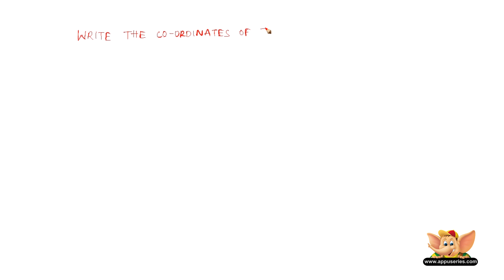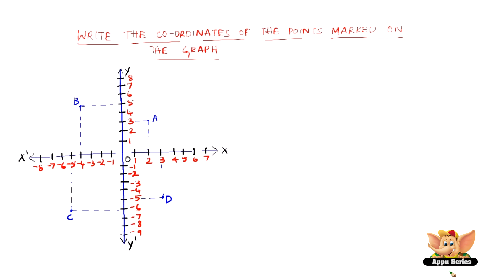Let us write the coordinates of the points marked on the graph. First, let us consider point A. We can see that the distance of A from the y-axis is 2 units, and the distance from the x-axis is 3 units. Since A lies in the first quadrant, its coordinates are (2, 3). Now let us consider point B.